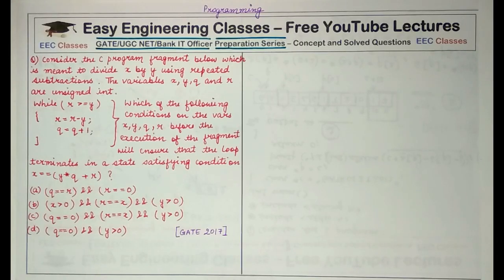So starting with our question of today's lecture, the question is: Consider the C program fragment below which is meant to divide X by Y using repeated subtractions. The variables X, Y, Q and R are unsigned integers.